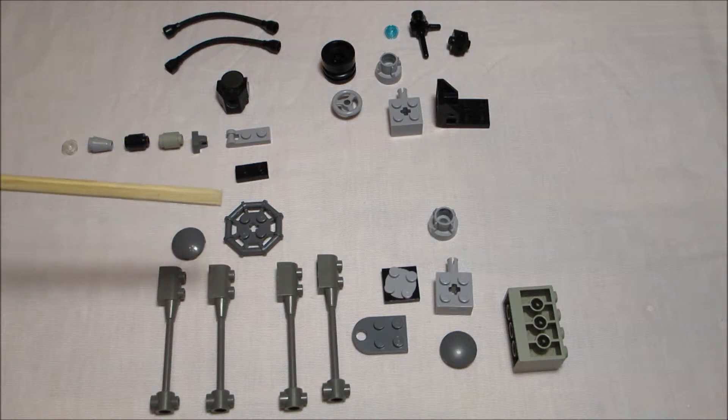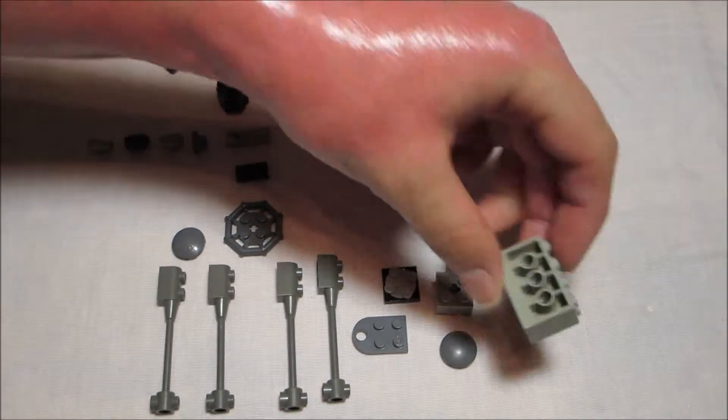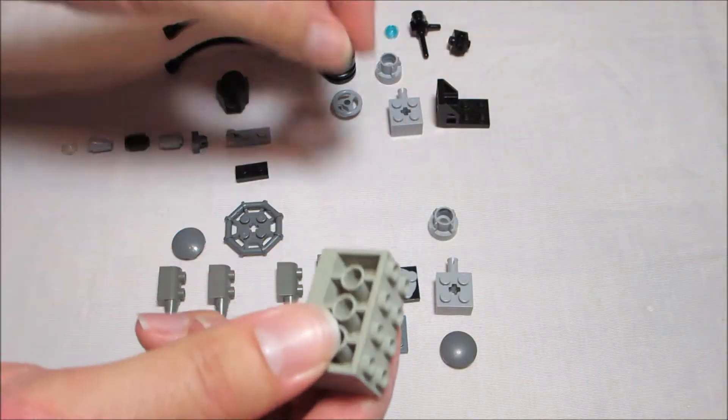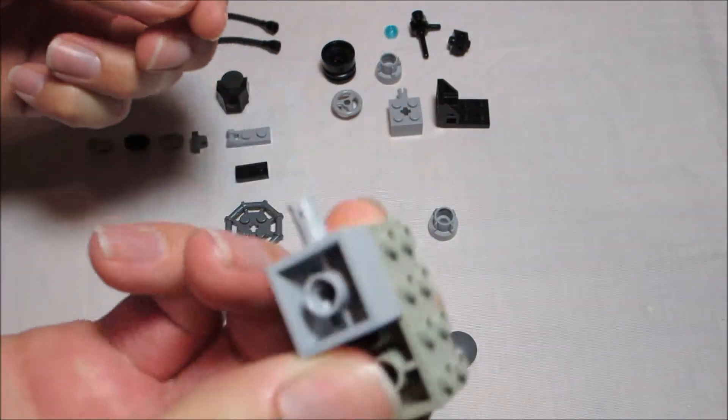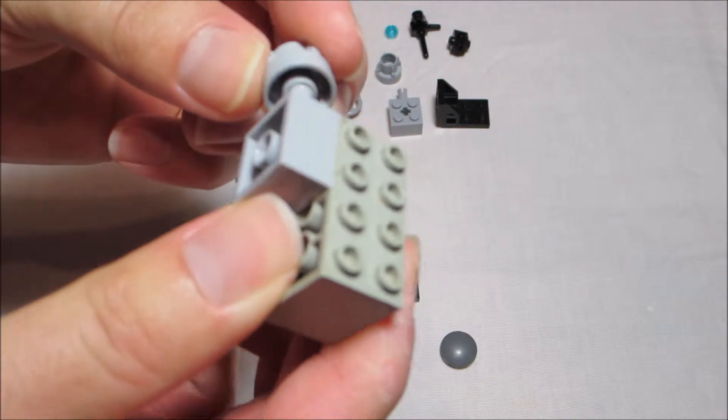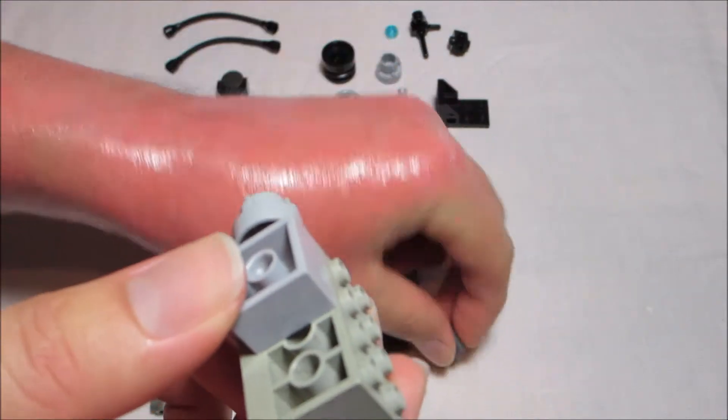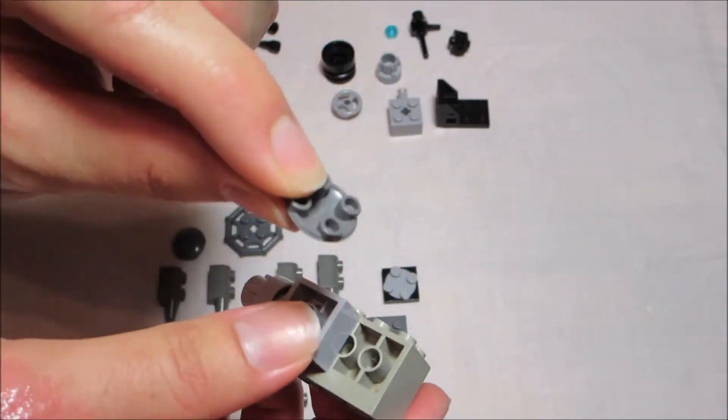Next we'll build a quad cannon which is on the right side of the mech. We'll start with a 2x4 brick with holes on each side. We'll have a 2x2 brick with the part poking out. And on the back of that we'll get the piece there.